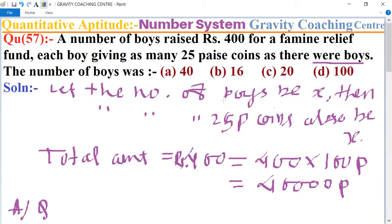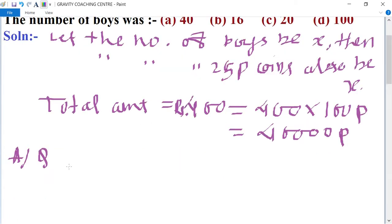According to the question, each boy giving as many 25 paise coins as there were boys. This means the contribution of each boy is 25x, and the total number of boys is x.